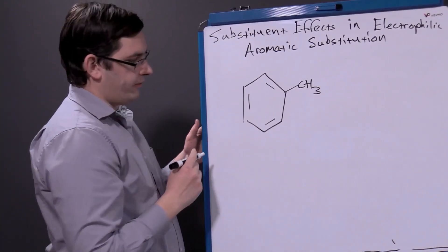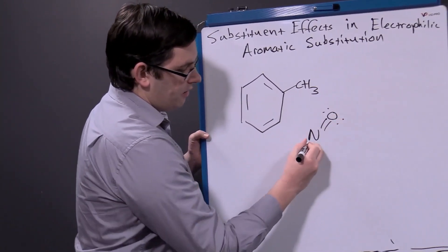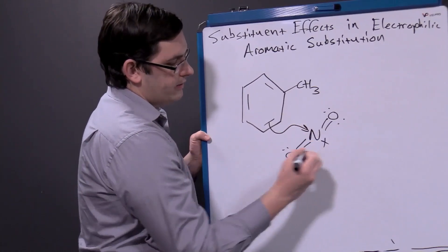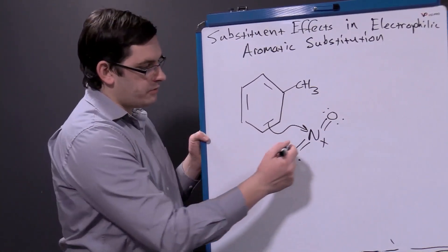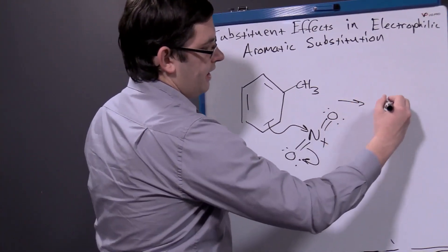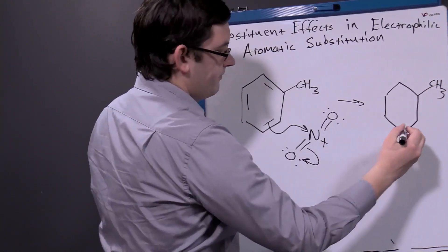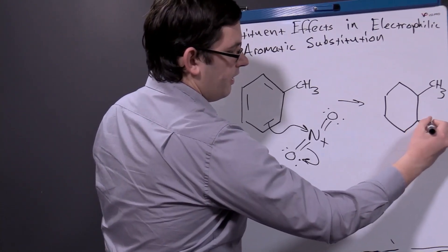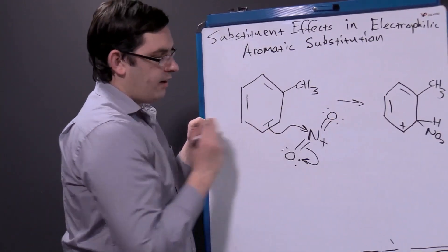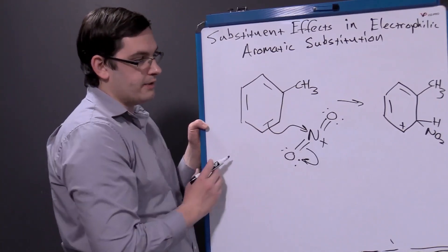Let's first look at our ortho case. If we're going to substitute at the ortho position, that means we're going to attack our nitronium ion from a double bond connected to one of our adjacent carbons. We show that arrow coming out, attacking our positively charged electrophilic nitrogen in the center of our nitronium ion. We need to move our electrons out of the way to make room for that new bond, and we produce our arenium cation intermediate. We get our carbocation produced next to where our original double bond was, because we're losing those electrons in that double bond as they attack and form the new bond to our nitro group.